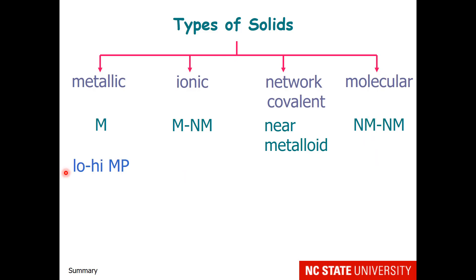Metallic solids can have a range of melting points from low to high. Ionic solids have high melting points.